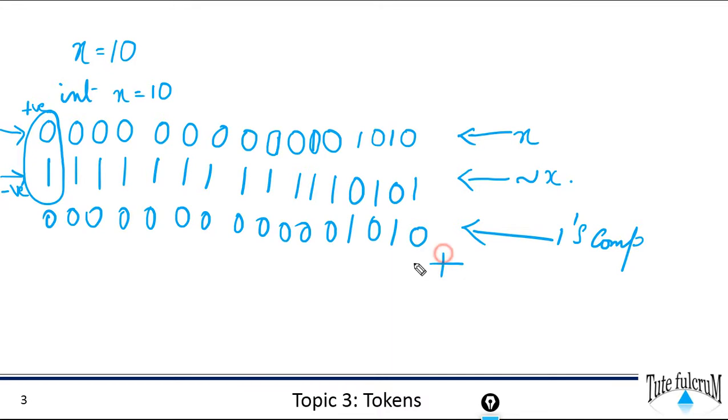Now add a 1 to this. So 1 plus 0 is 1, 1, 0, 1. Remaining all bits are 0's.